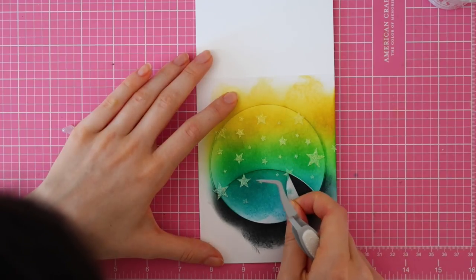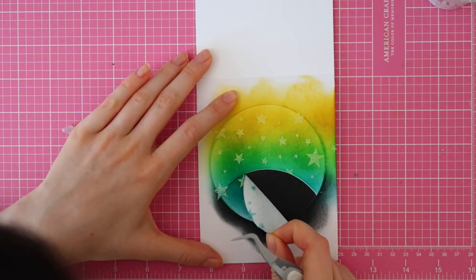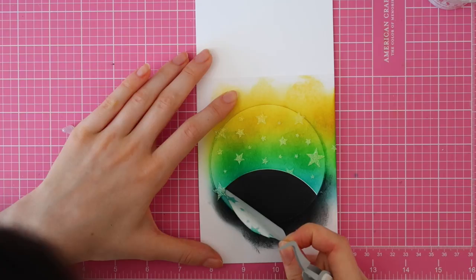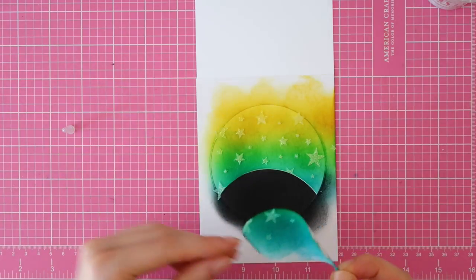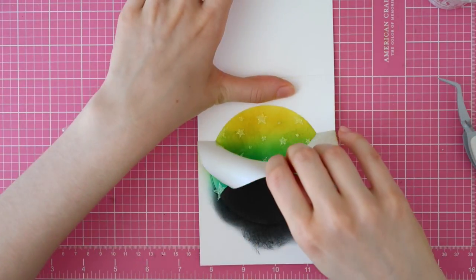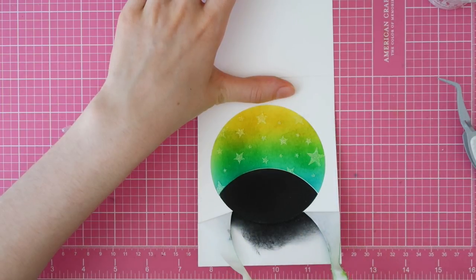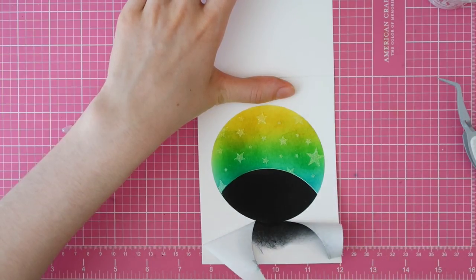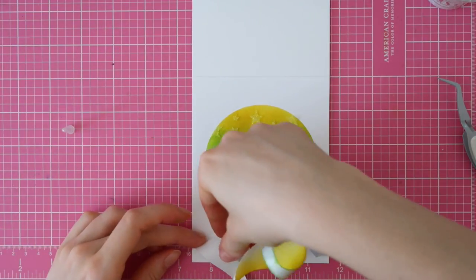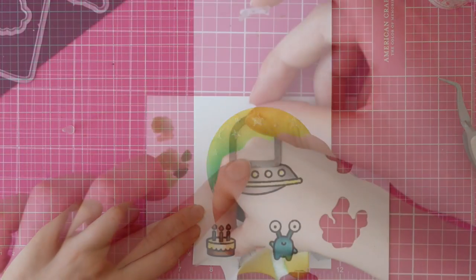Then it's time for my favorite part of this card. I'm peeling off the masks, and I just enjoy doing this so much because then you're able to see the gorgeous background or the gorgeous stamping you just did. It's so satisfying to peel off the mask and to see your finished result.